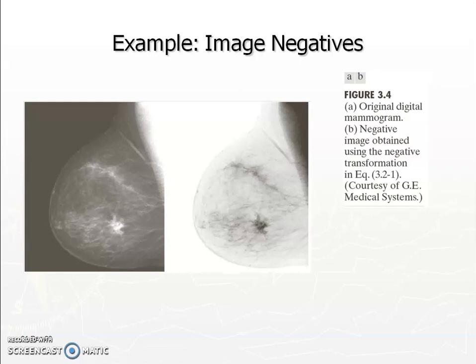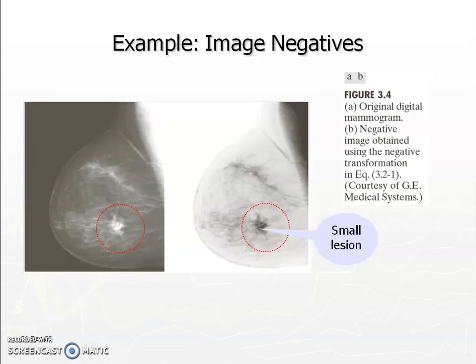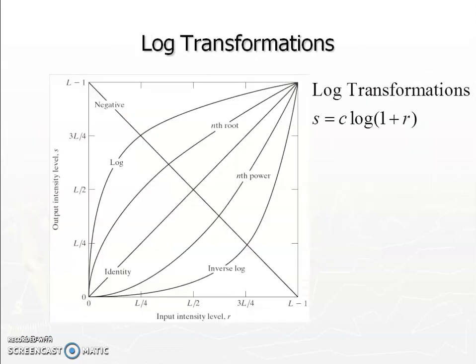Here you can see a mammogram image used for breast cancer detection. The negative transformation makes the image more appealing to the eye — you can see that the cancer tissue in the breast, which is detected using image processing techniques, becomes more visible after applying the negative transformation.